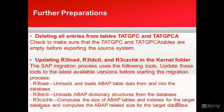Next is updating R3load, R3ldctl, and R3szchk in the kernel folder. The SAP migration process uses these tools and we need to make sure we have the latest versions before starting. R3load unloads and loads ABAP table data from and into the database. R3ldctl unloads the ABAP dictionary structure from the database. R3szchk computes the size of ABAP tables and indexes for the target database and computes the ABAP-related size for the target database.